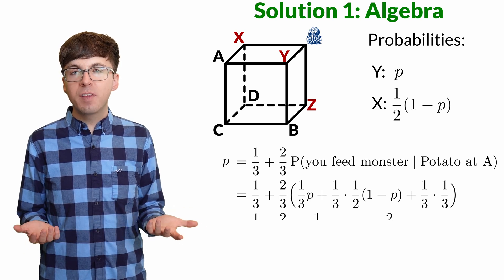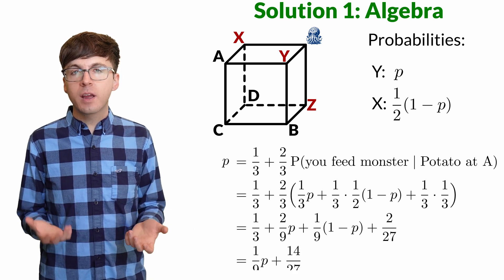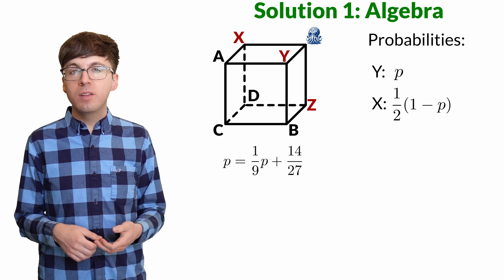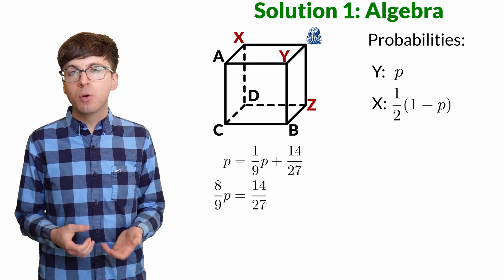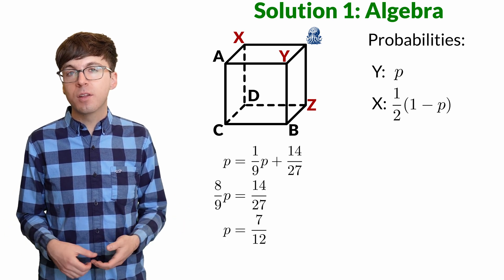We can multiply everything out and solve for p. After we combine the fractions, we get p equals one-ninth p plus fourteen-twenty-sevenths. We subtract one-ninth p to the other side, and multiply both sides by nine-eighths. We get that the probability we feed the monster is seven-twelfths.